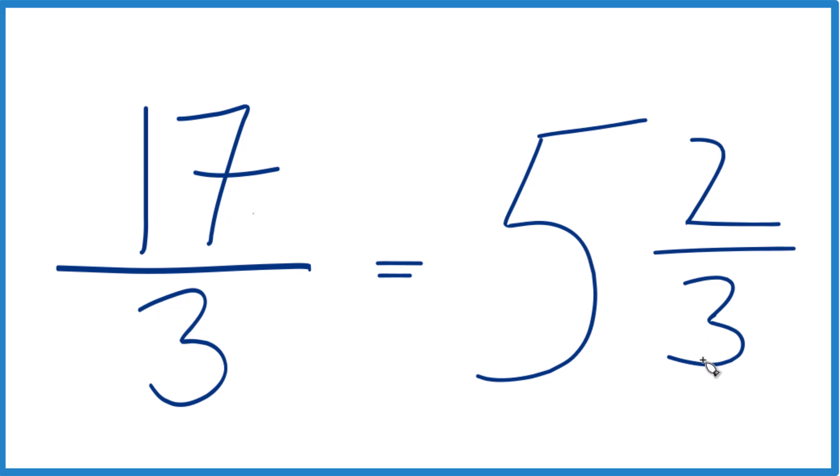We can check that. Five times three is 15. 15 plus two, that's the 17. And the three, we just keep that the same.